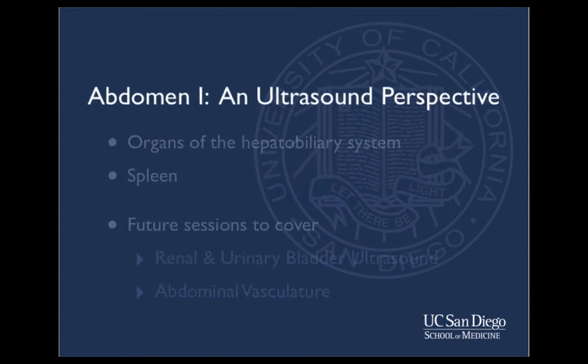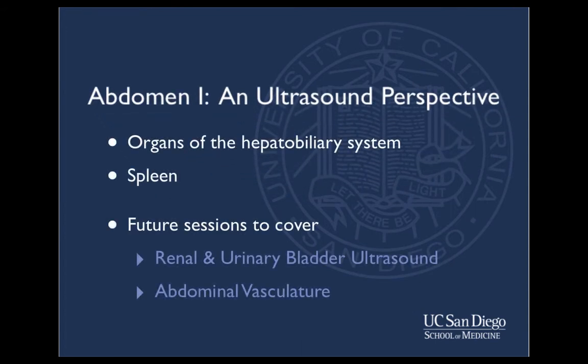In general, this module is intended to explore the anatomy and physiology of selected abdominal organs from an ultrasound perspective. Specifically, we will discuss the organs of the hepatobiliary system, which include the liver and the gallbladder. We will also discuss the spleen, which, while not a gastrointestinal organ, can be scanned with a sonographer's approach similar to scanning the liver. Other abdominal structures and their ultrasound exams will be discussed in more detail in future modules.